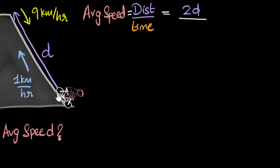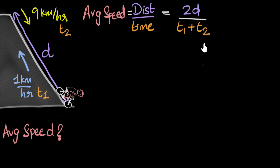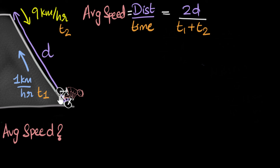What about time? The time taken is not the same for each direction — while going up the time taken was more; let's call that T1. While coming back down, let's call that time T2. The total time is T1 plus T2. Can we figure out what T1 and T2 are? For upward motion, we know the distance is D and the speed is one kilometer per hour, so using speed equals distance over time, T1 equals D over one, which is just D. For downward motion, the speed is nine kilometers per hour, so T2 equals D over nine.